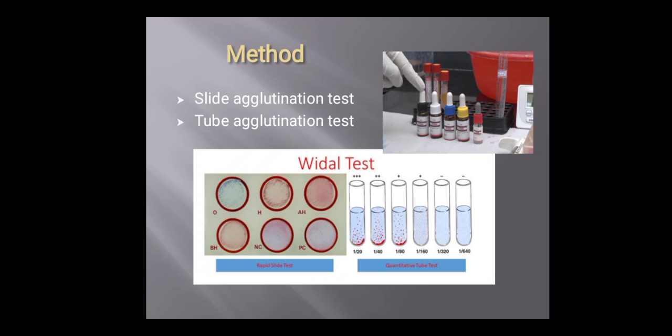Place one drop of patient serum to be tested on each of the required number of reaction circles. Then add one drop of O antigen suspension to the reaction circle containing the positive control and physiological normal saline. Add one drop each of the antigen suspensions—O, H, AH, and BH—to the reaction circles containing the patient's serum.